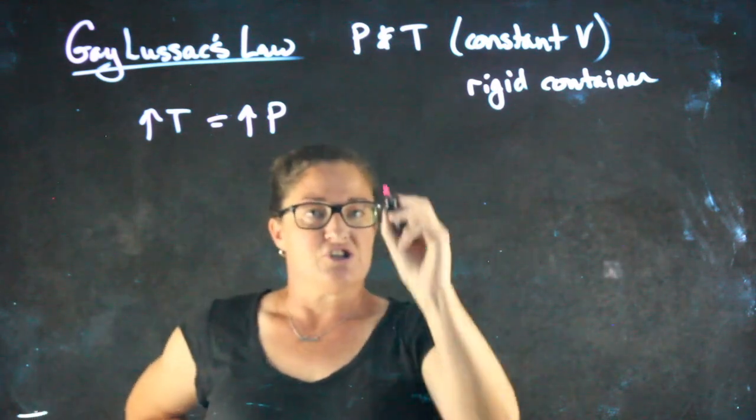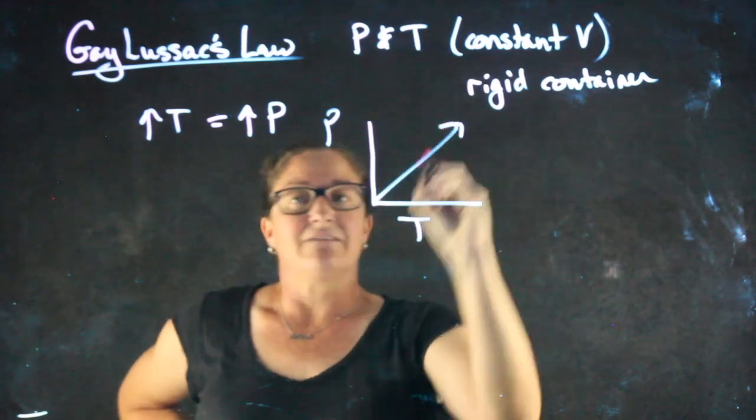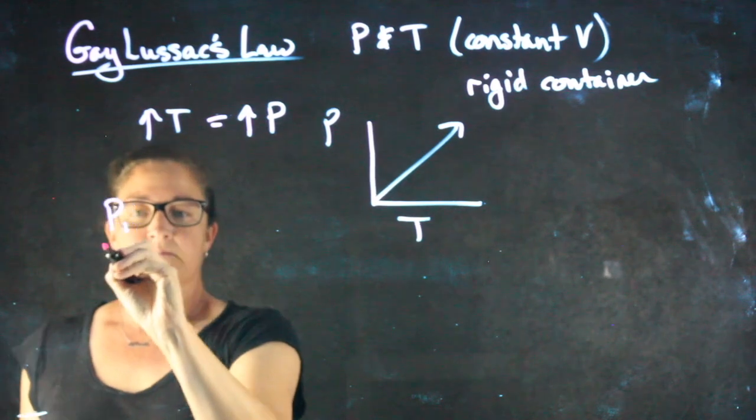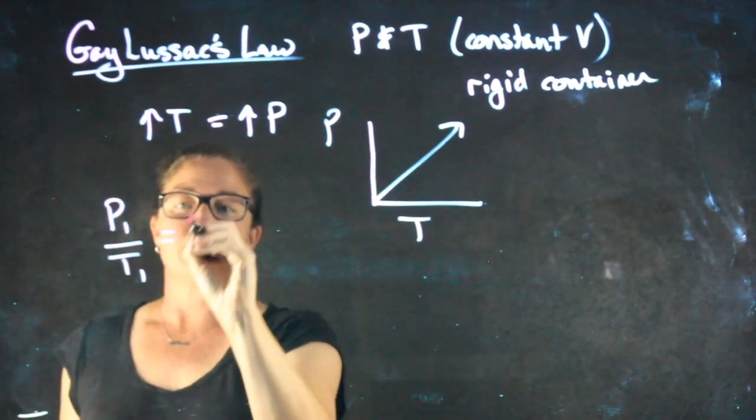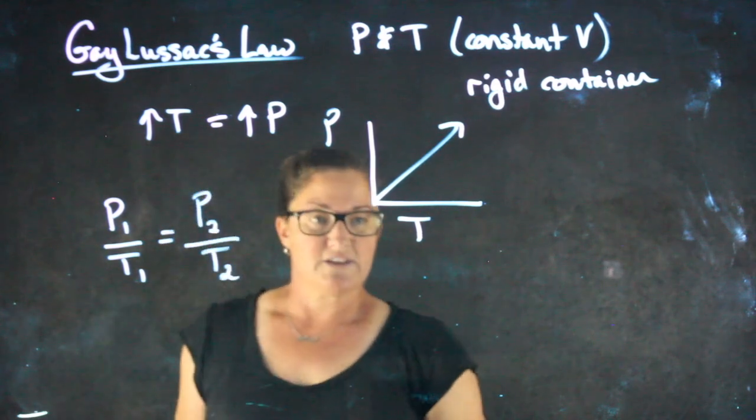We have another direct relationship where pressure is directly proportional to temperature. And this law can also be written as P1 over T1 equals P2 over T2.